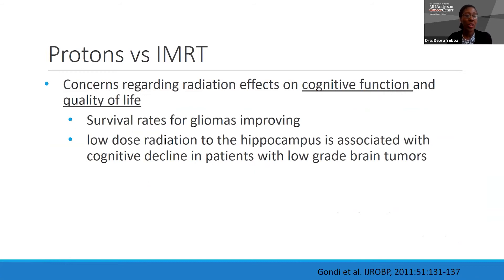As radiation oncologists, we are always looking to improve outcomes and minimize toxicity. We spend a lot of time thinking about long-term sequelae and how to improve cognition. This leads into the discussion of protons versus IMRT. For the non-radiation oncologists in the audience, IMRT or VMAT are the newer, more sophisticated versions of radiation therapy. I like to explain that while these are photon radiation therapies, they are not the photon radiation therapy people recall from the 1980s or 1990s — the difference is like using a pay phone versus your current iPhone.